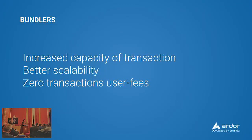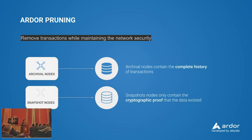The second benefit is related to blockchain bloat. Thanks to this multi-chain architecture, we can have two types of nodes. On one side we have archival nodes which contain the complete history of transactions, and on the other side we have snapshot nodes which only contain the cryptographic proof that the data existed. This way we can remove transactions from the database without compromising the security of the network — we call this the pruning feature.